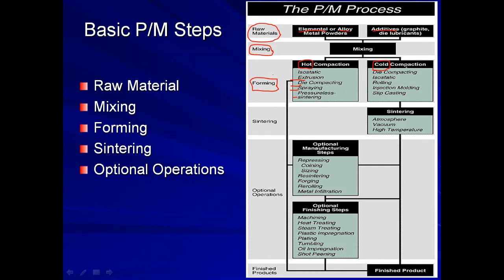In cold compaction, the processes include die compacting — where material is fed between dies and pressed — isostatic rolling, which is similar to isostatic extrusion but replaces extrusion with rolling, injection molding used for plastic or resin products, and slip casting used to produce ceramic products like pots and others.